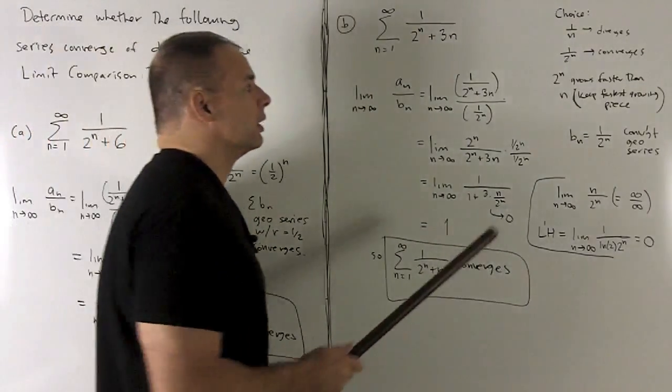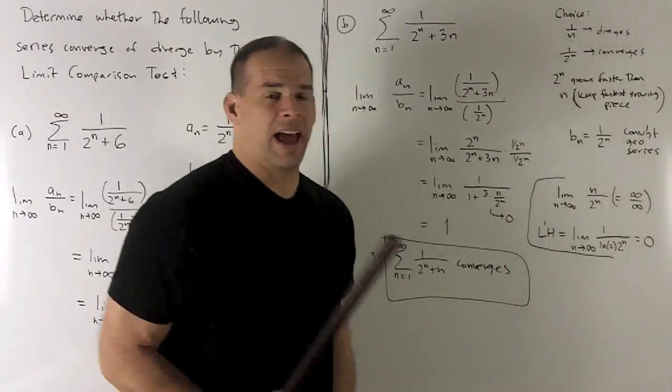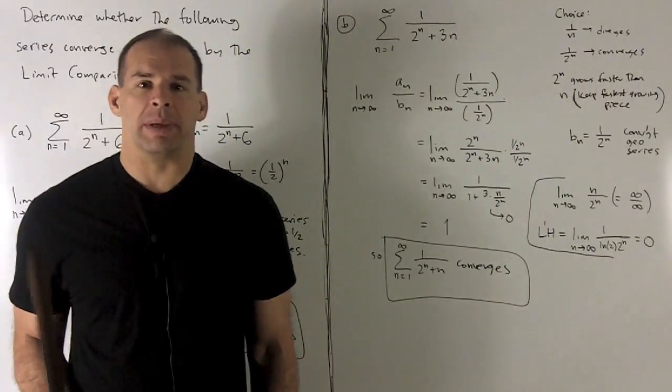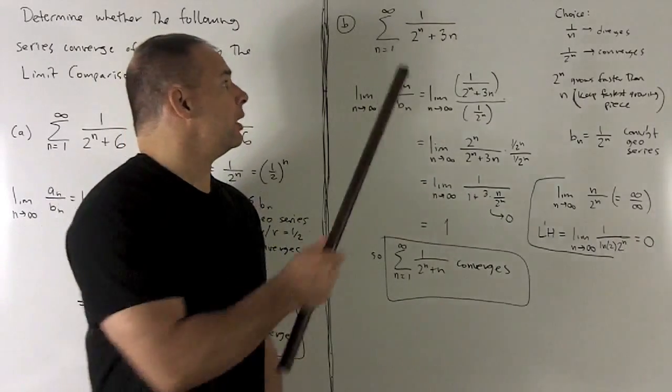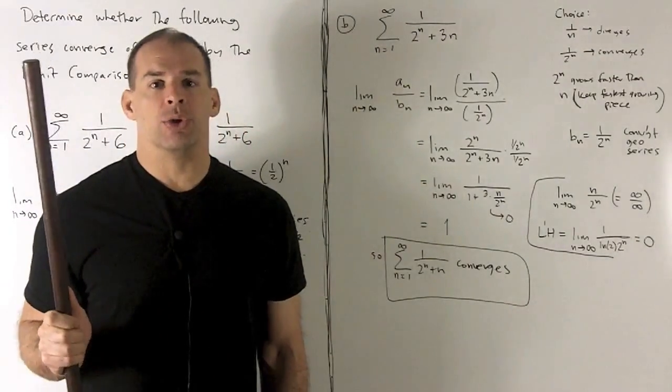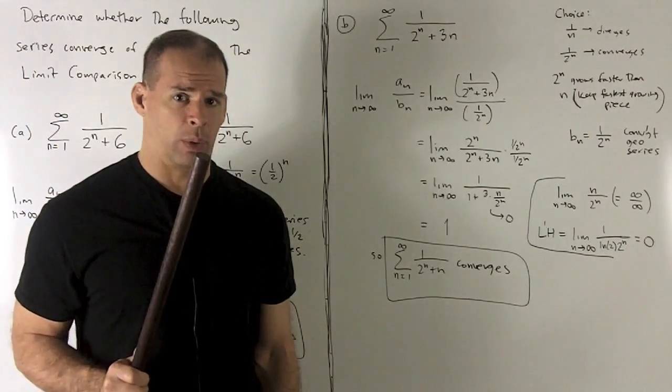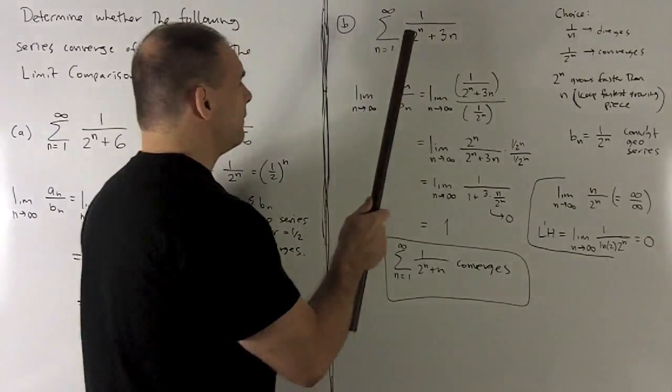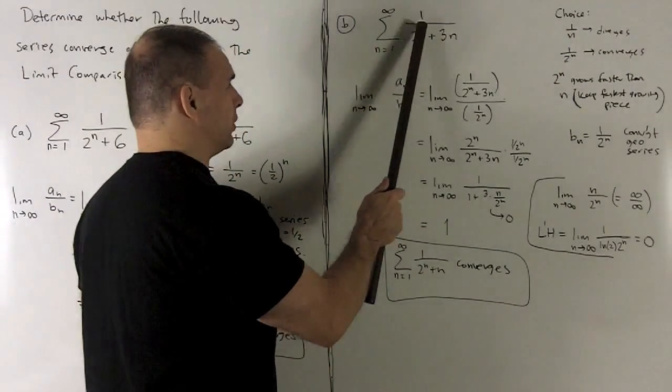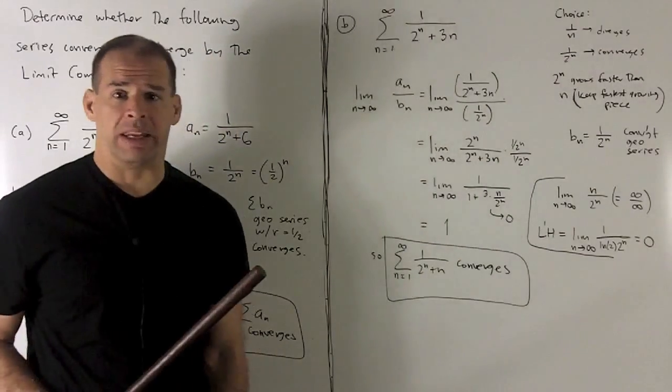The thing to notice, 2^n is going to have a lot faster growth than n, and as a rule, you're going to want to keep the pieces on the top and bottom. There's no interesting thing going on in the top here, but you would use the fastest growing pieces in the top and the bottom, and then collapse and see what you're left with. Fastest growing piece in the bottom here is the 2 to the n, so we're going to choose our 1 over 2 to the n as our b to the n.